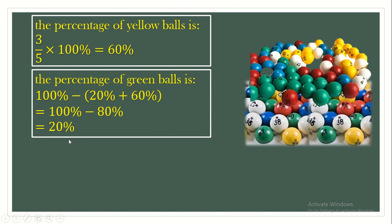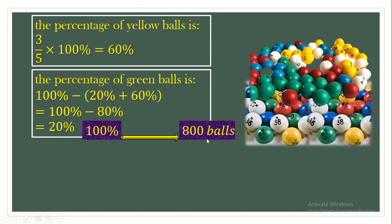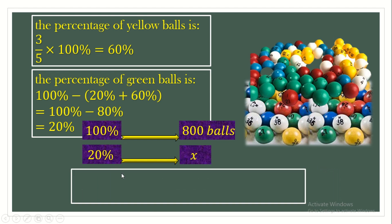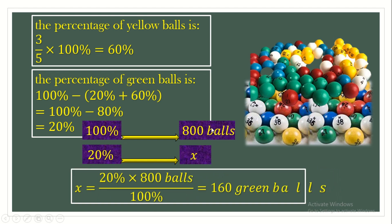The total percentage of 100% represents 800 balls. The green balls represent 20%. So X equals 20% times 800 balls, all over 100%. The number of green balls is 160.